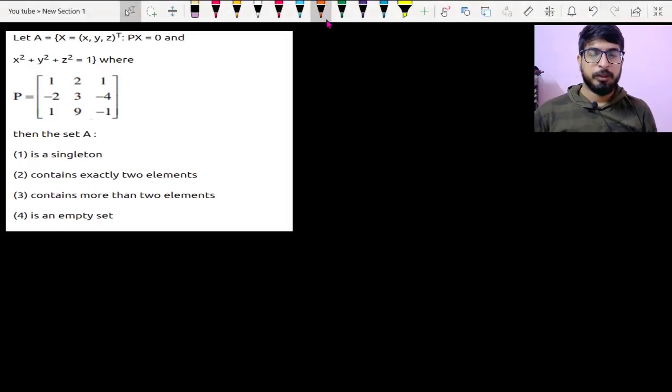Hello everyone, in this question they are saying that A is a set of these numbers x, y, z where Px is 0. So in A it is a matrix X which is a 3 by 1 matrix.